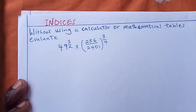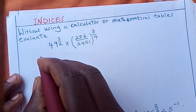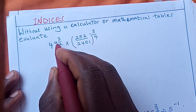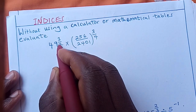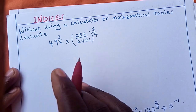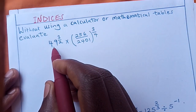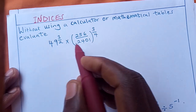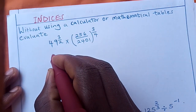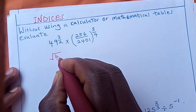We want to work this question out. When we have a number raised to a fraction, the denominator tells us which root to find. If the denominator is 2, we find the square root; if it is 4, we find the fourth root. So here we are going to find the square root of 49, and for the bracket term we find the fourth root.